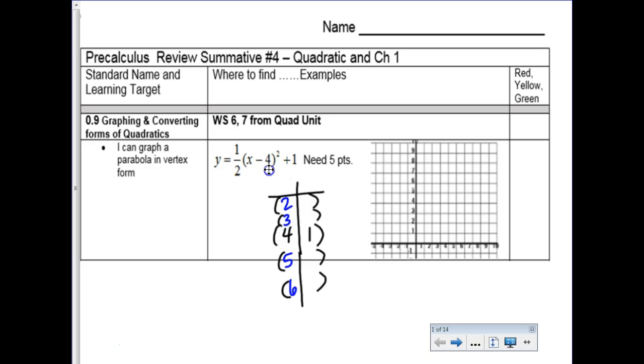Plugging in a 2, 2 minus 4 is negative 2 squared would be a 4, but it's 1 half times 4, so it's 2 plus 1, which is 3. And then plugging in a 3, 3 minus 4 is negative 1, negative 1 squared is 1. So this is 1 half plus 1, which is 1.5. And then if you go and plug in those values, you're going to get the same y values because it's symmetrical.